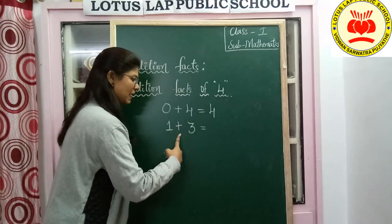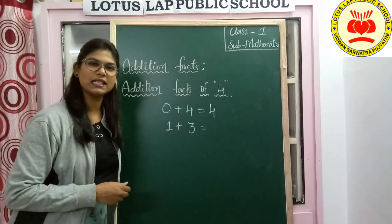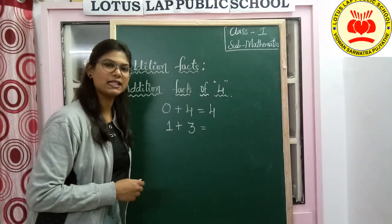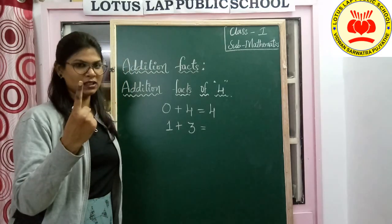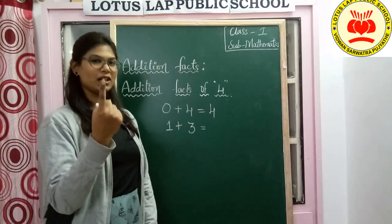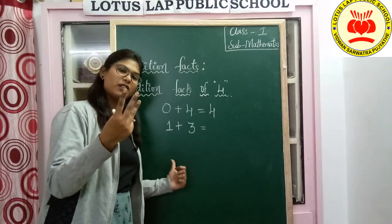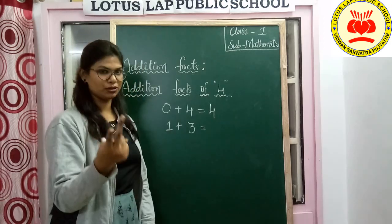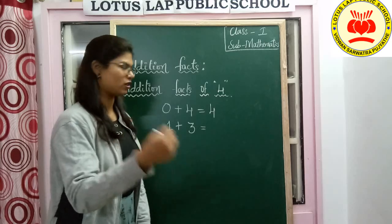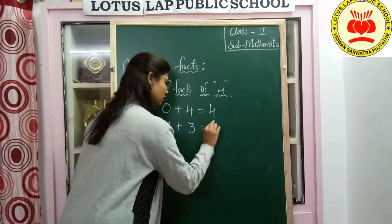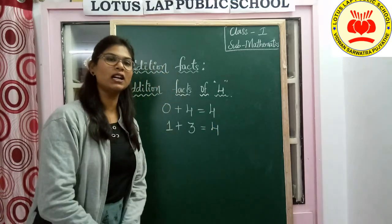So here we will get 3. 1 plus 3. What will be the result of 1 plus 3? Start at 1, then take 3 fingers: 1 after — 2, 3, 4. So what is the answer we got? 4.